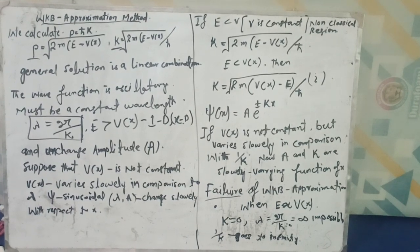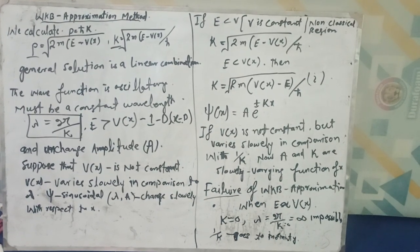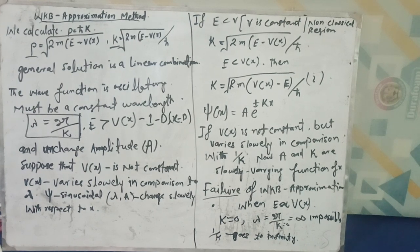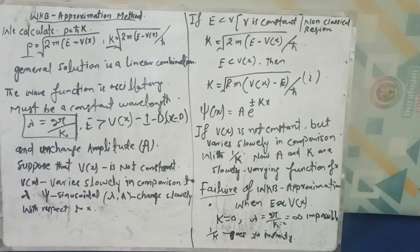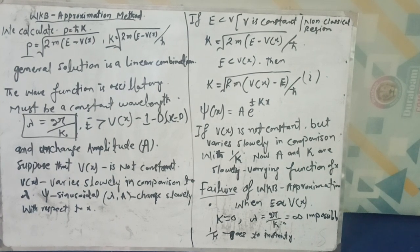In the first lecture we calculated the momentum: p = 2m(E - V(x))^(1/2), and the value of k = 2m(E - V(x))^(1/2) / ℏ.